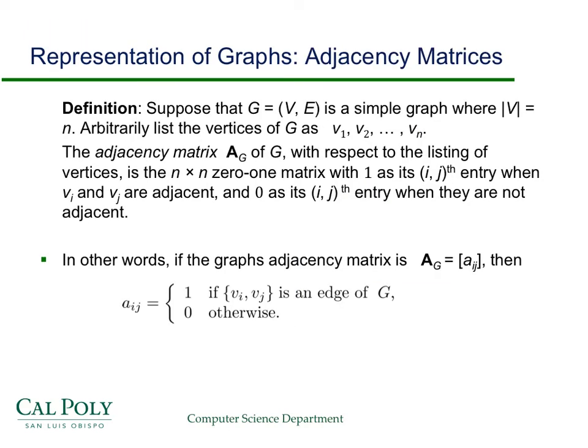Another representation for a graph in a computer is to use adjacency matrices. I'm not going to go over the definition. The idea is pretty simple. You have an N by N, where N is the number of vertices, matrix, and if there's an edge, say, from Vi to Vj, you put a 1 in that position, in the IJ position, and if there's no edge, then you put a 0. So we'll see that on the next slide.